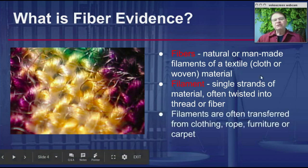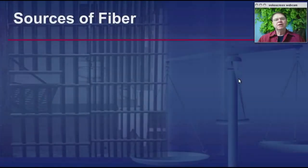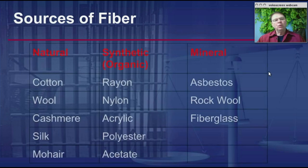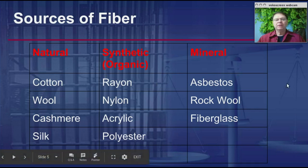Filaments are often transferred from clothing, from rope, from furniture, or carpet — as we saw in the Wayne Williams case. There are many natural sources of fiber: cotton, wool, cashmere, silk, and mohair.